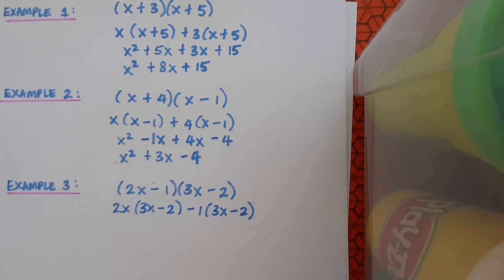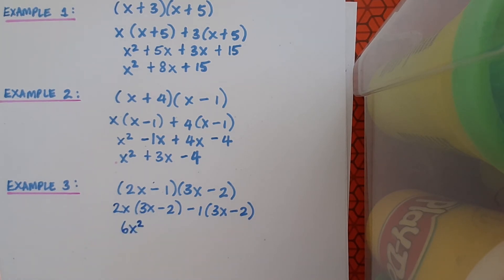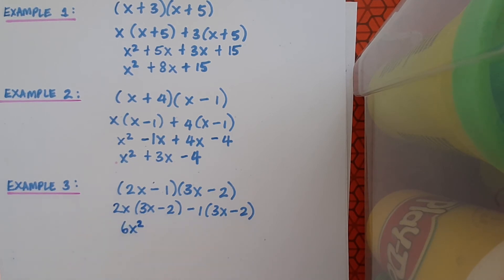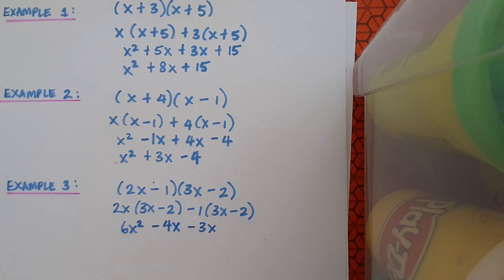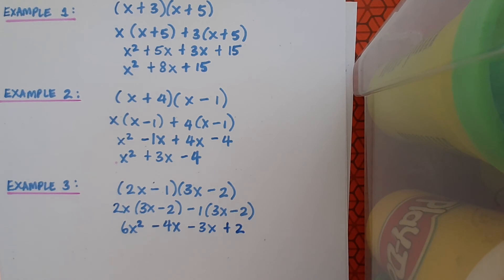Now we begin to multiply. 2x by 3x gives 6x squared — that's 2 by 3 is 6, and x by x is x squared. Next, 2x by minus 2 gives minus 4x. Then minus 1 by 3x gives minus 3x. And minus 1 by minus 2 — don't forget, a minus by a minus makes a plus — gives plus 2.